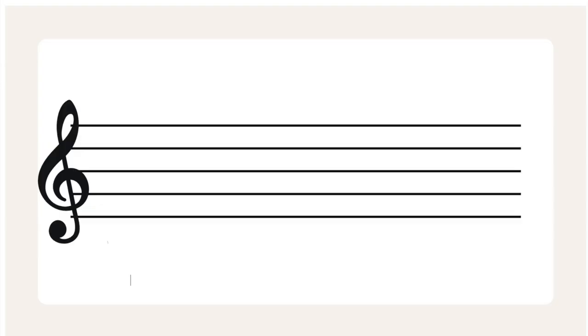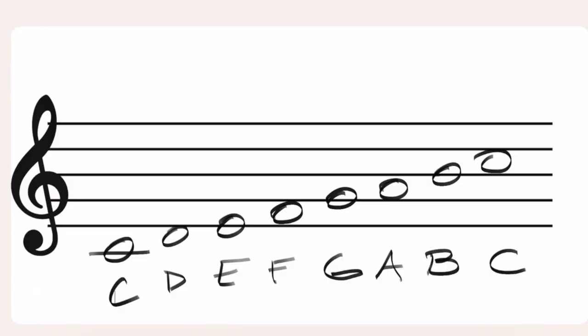If we take a major scale — let's take the C major scale to start with — and we look at every single note, we know that in a one-octave scale we have seven notes, eight if we count the C that repeats. So we have C, D, E, F, G, A, and B, and those are all of the scale degrees of our C major scale.